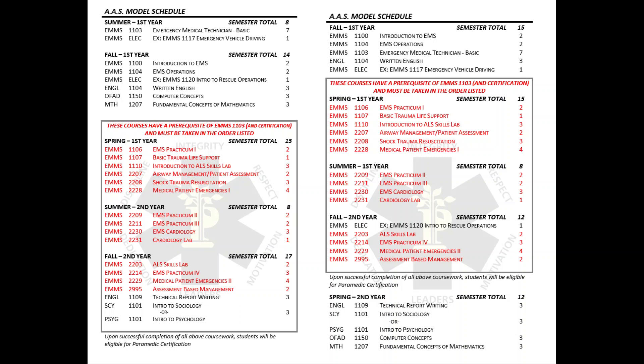Notice on both models the majority of those classes are highlighted in red in that gray box. That is what's considered our paramedic cohort, which only begins every spring semester — every January. All those red classes have to be taken in that respective semester and in that order; they must be blocked together with no deviation. To get into the paramedic cohort, you must have credit for EMMS 1103 or have obtained your EMT basic certification elsewhere as a transfer student.